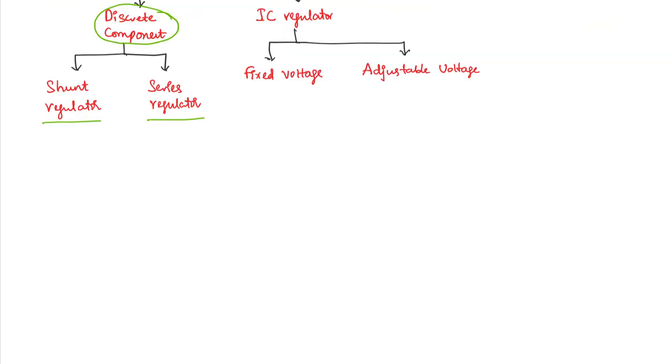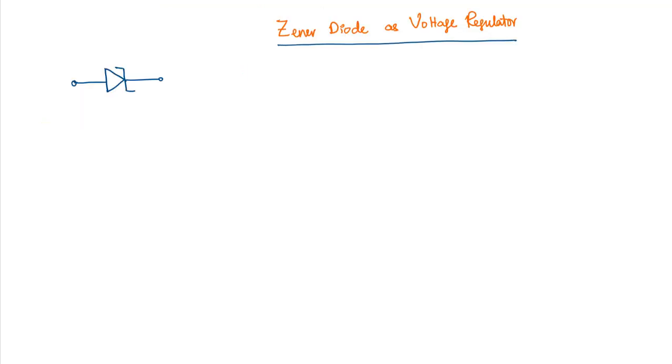Now we will move and touch upon the zener diode characteristics and how it can be used as a voltage regulator. The circuit symbol of a zener diode is shown here and its current voltage characteristics shown here. We call the voltage at which the current in the reverse device abruptly increases as breakdown voltage.